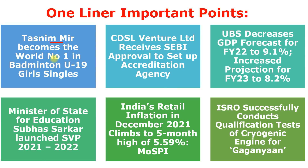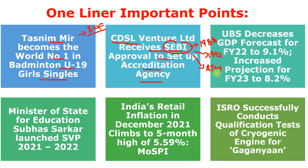One-liner important points: Tasneem Meer becomes world number one in badminton under-19 girls singles per the BWF junior ranking — already covered. Next, Central Depository Services Limited (CDSL) Ventures received SEBI's approval to set up an accreditation agency. SEBI was established in 1988, became a statutory body in 1992, its current head is Ajay Tyagi, and headquarters is in Mumbai. CDSL is India's only listed depository, established in 1999, with CEO and MD Nehal Vora.